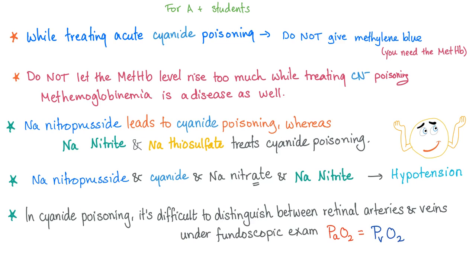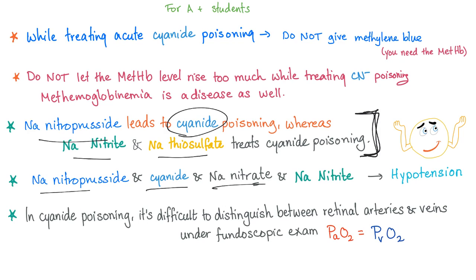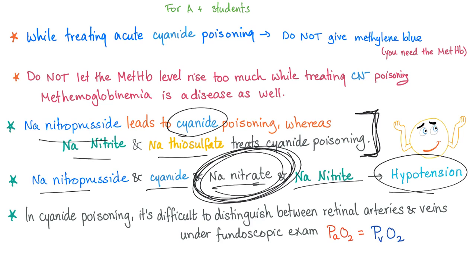Key distinction to avoid confusion: sodium nitroprusside CAUSES cyanide poisoning, whereas sodium nitrite and sodium thiosulfate TREAT cyanide poisoning. Also important: sodium nitroprusside, cyanide, sodium nitrate, and sodium nitrite all lead to hypotension. This is why combining Viagra with sodium nitrate is dangerous — both drop blood pressure, potentially leading to death or reflex tachycardia.